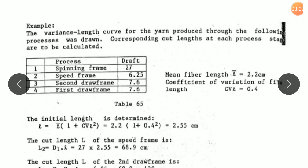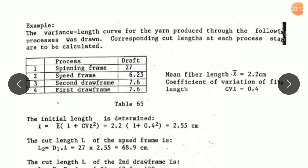Let us elaborate with the help of an example. Here, ring frame draft of 27 has been given, speed frame draft of 6.25, second draw frame draft of 7.6, and first draw frame 7.6.